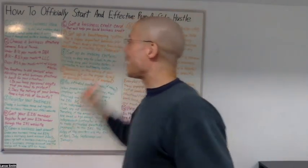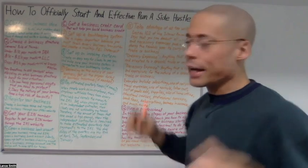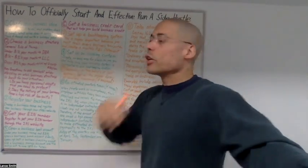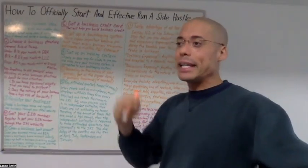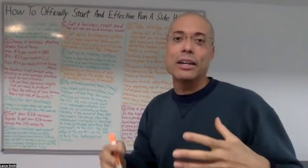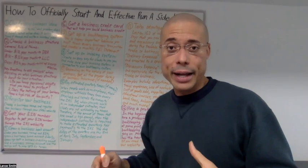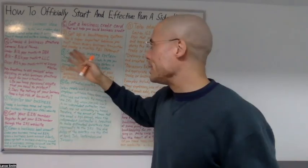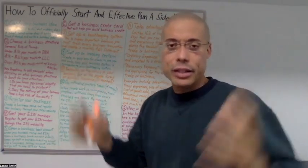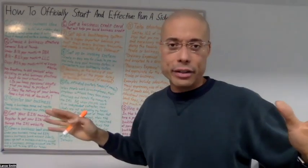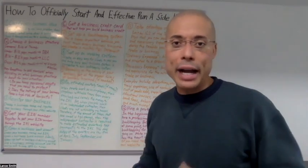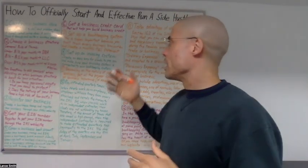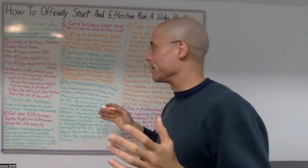Number two, choose a business structure. Here's a general rule of thumb: if your business is making under $1,000 each month, then most likely you should just be a DBA, doing business as, which is just a regular sole proprietor. Stay as a sole proprietor but register your trade name and become a DBA.